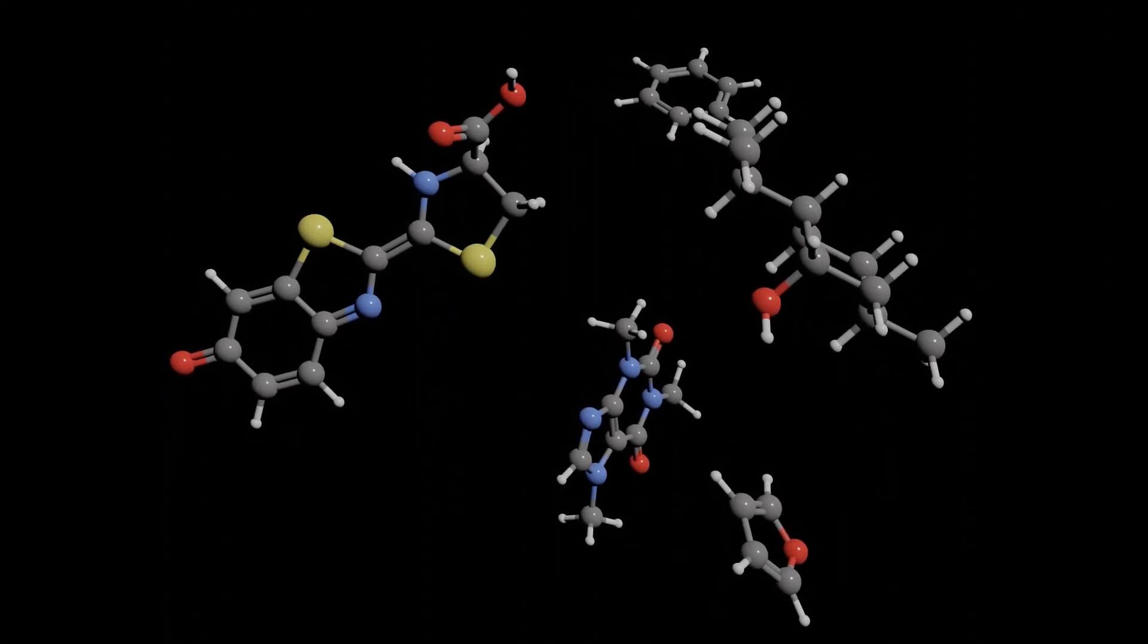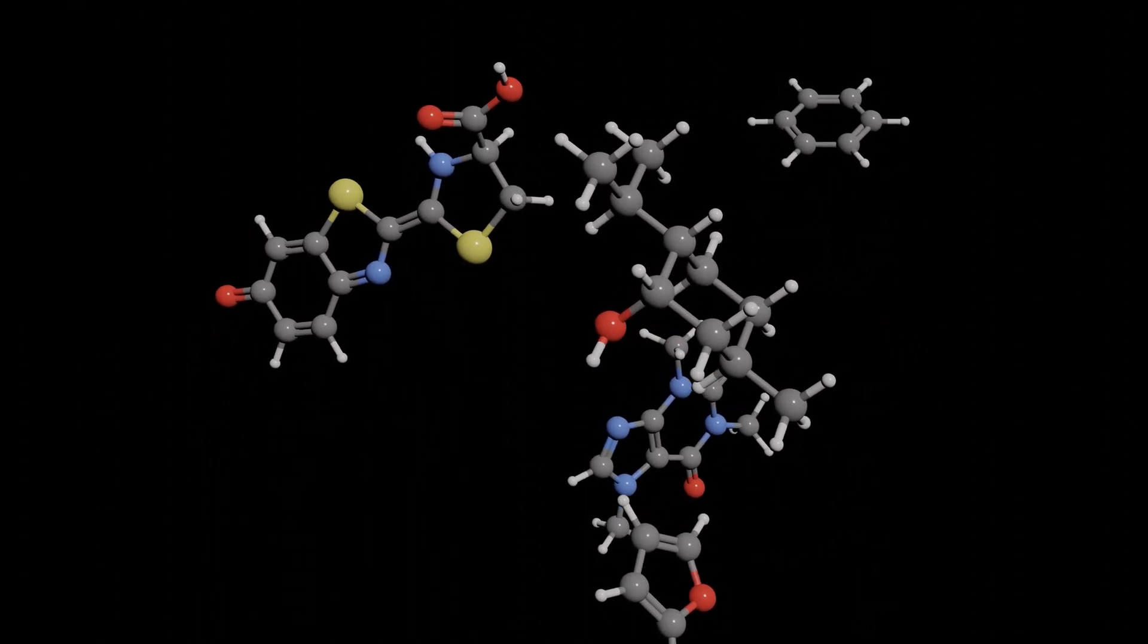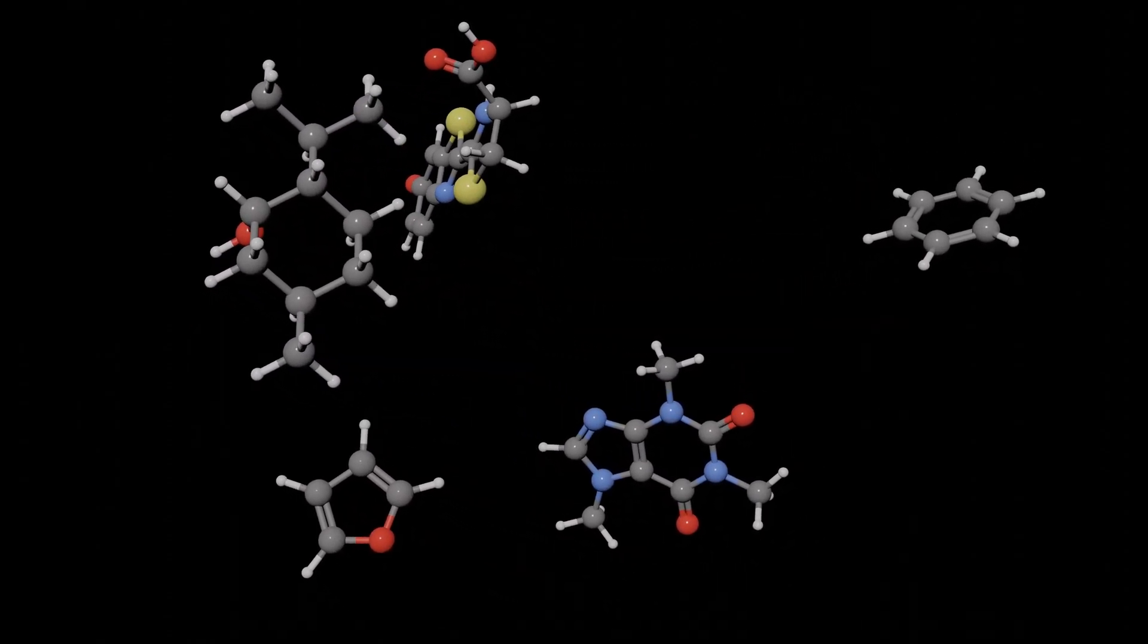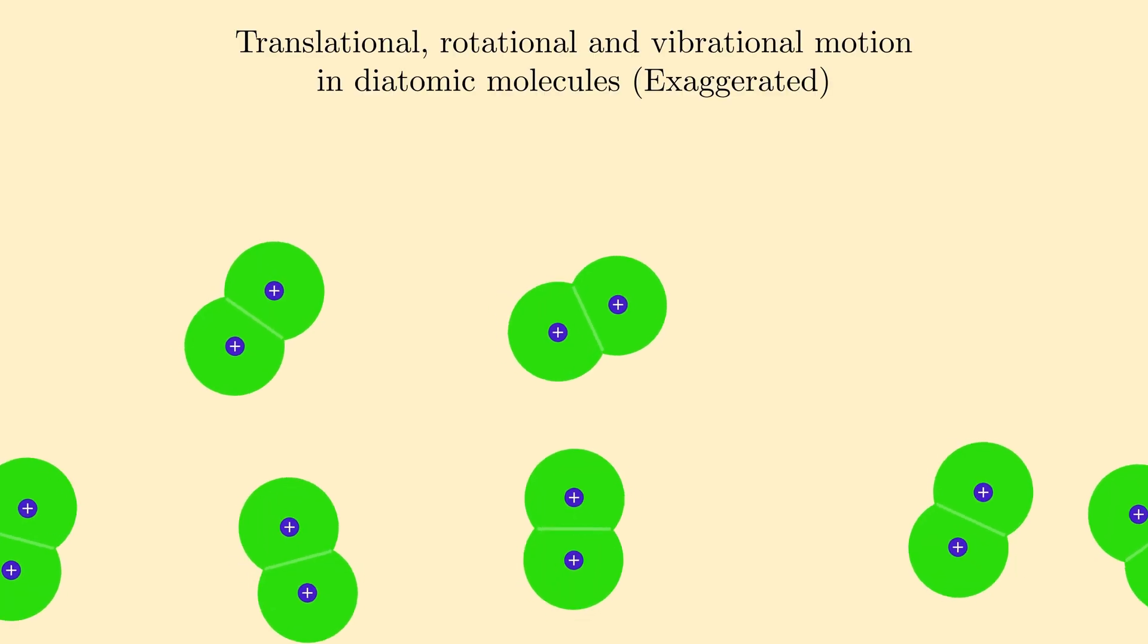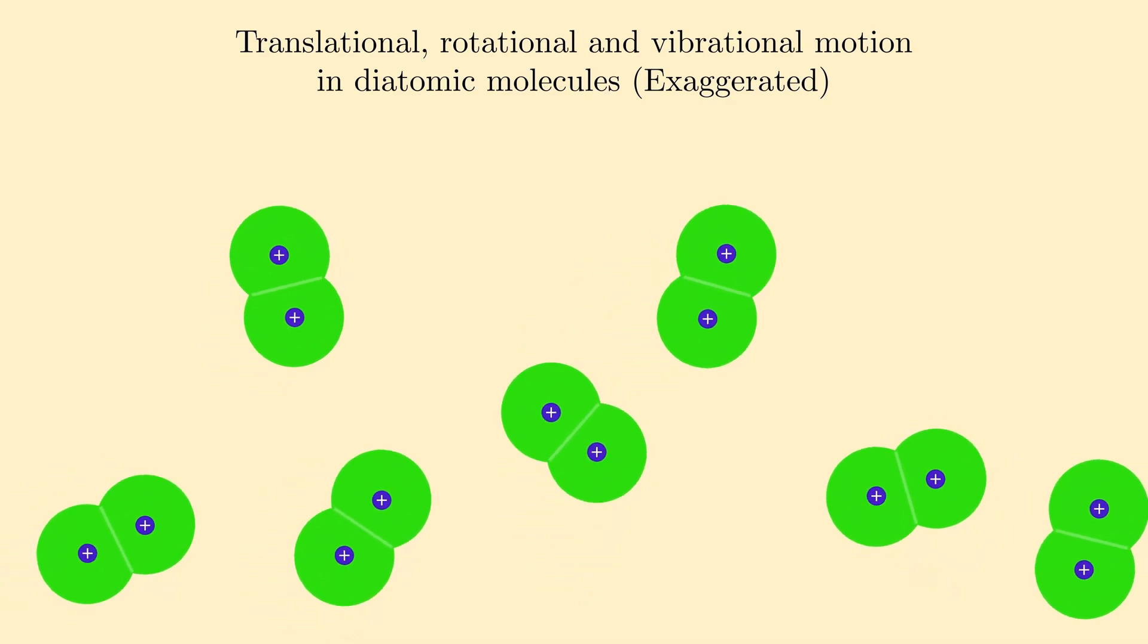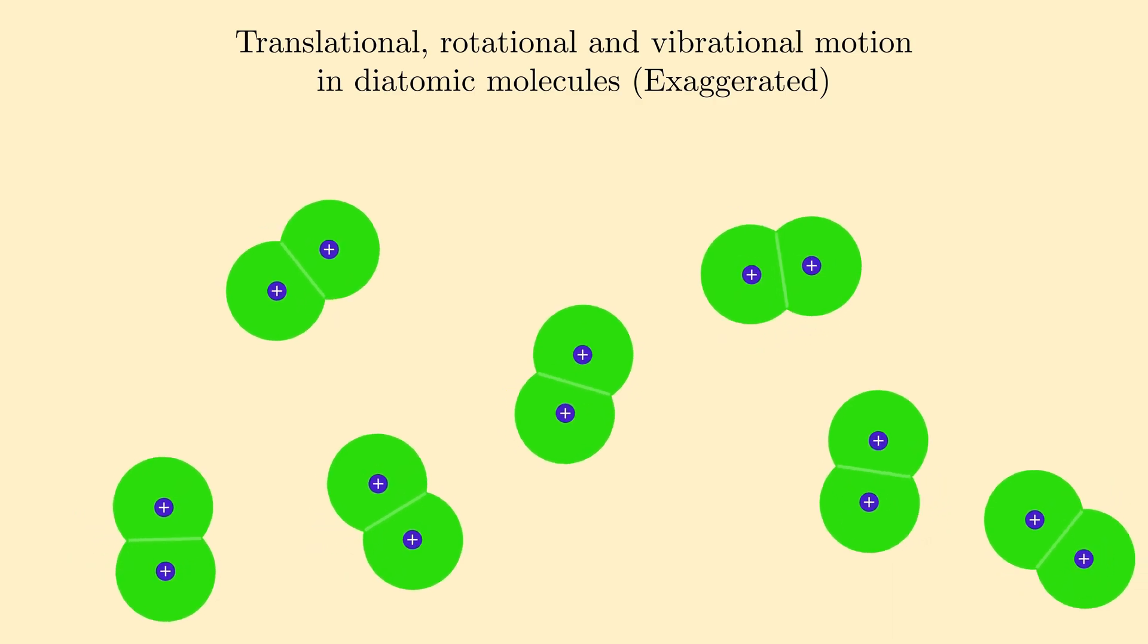It remains till today a widely used tool in quantum chemistry to understand the structure and properties of molecules. To appreciate what the Born-Oppenheimer approximation brings to the table, let us first take a look at the Schrodinger equation of a molecule.